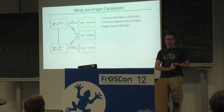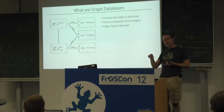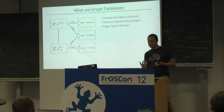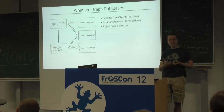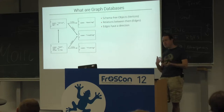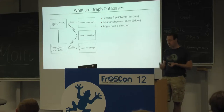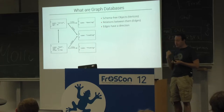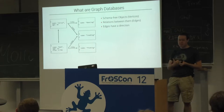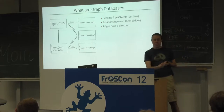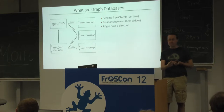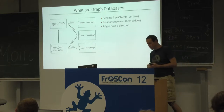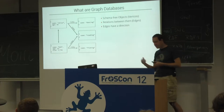Then they store relations between those vertices, which are called edges, and you can compare them with many-to-many relations in a relational database. Importantly, edges have a direction, so one of the vertices is the start and the other side is the target, or source and target.